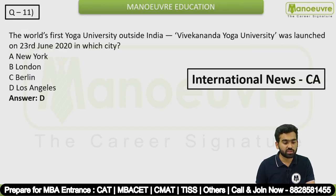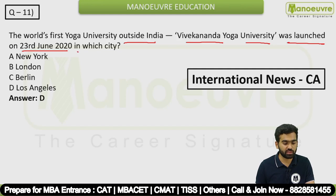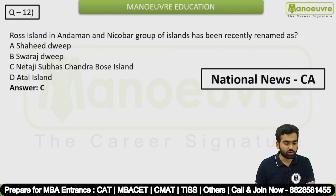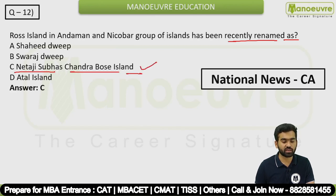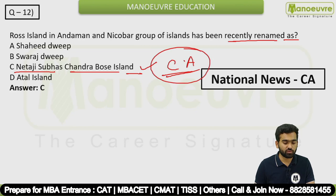Question 11: The world's first yoga university outside India, Vivekananda Yoga University, was launched on 23rd June 2020. In which city was it launched? The answer is option D — Los Angeles. Question 12: Ross Island in the Andaman and Nicobar group of islands has been recently renamed as Netaji Subhash Chandra Bose Island. This is a current affairs question.